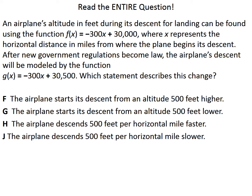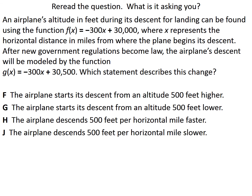That's a lot going on. Let's try to get a gist of the situation. We have an airplane descending — going down to land — and it gives us a function where x is the distance in miles from where the plane begins to go down. Something changes due to a new law, and the airplane's descent is now modeled by the new equation. We need to figure out which statement best describes that change. Let's highlight the question: which statement describes this change — the change from this equation to the other one?